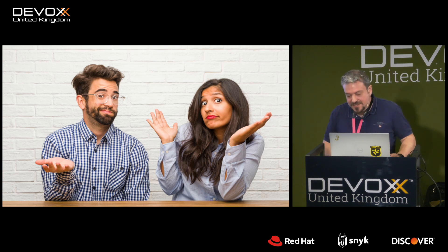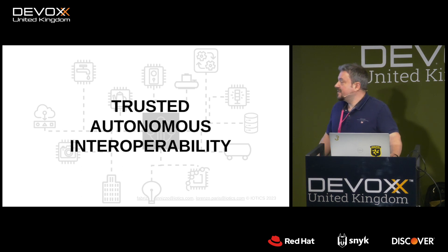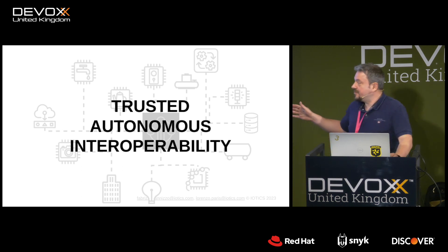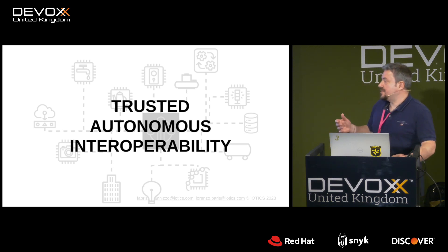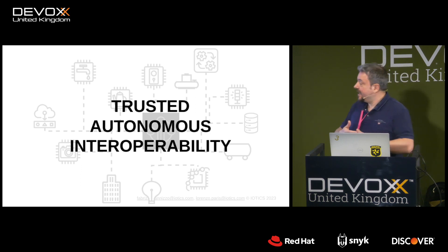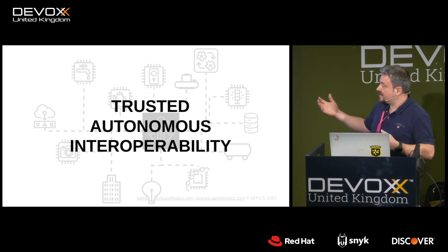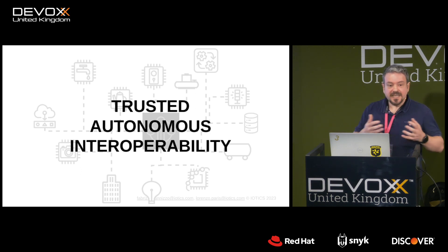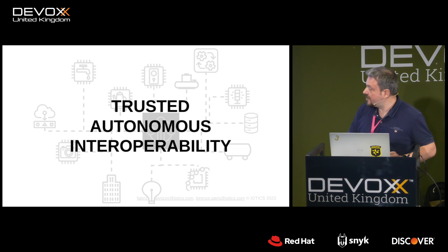The key to enabling a smart city, in our opinion, is enabling trusted autonomous interoperability. In the next 30 to 40 minutes we're going to show how devices can talk to each other in a trusted manner, autonomously, without any intervention from developers or programmers, and exchange data and interoperate.